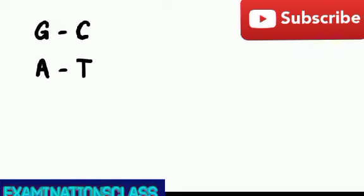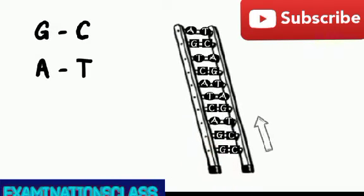Similarly, the complementary pairing of the bases meant that the backbones ran in opposite directions to each other, one up, the other down.